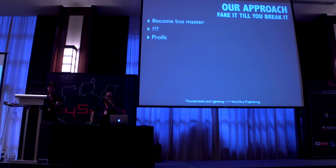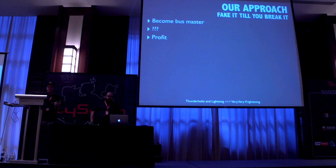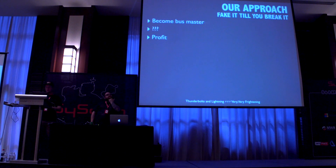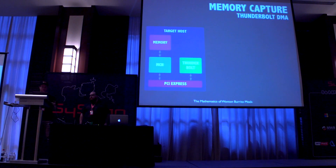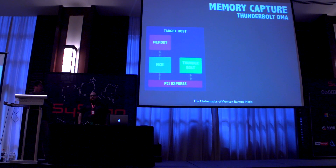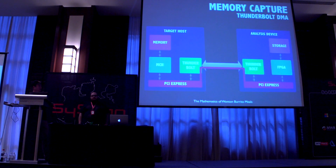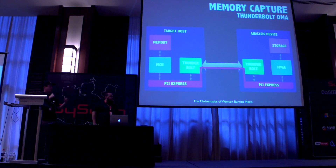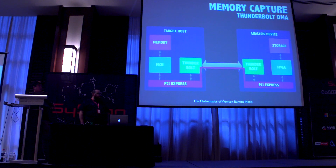To attack a Mac using PCI Express, we need to become bus master first so we can do all the reads and writes we want. The architecture we want is: target host with Thunderbolt controller, extended via a Thunderbolt to PCI Express adapter, connected to our FPGA. Basically, the PCI Express bus is extended out the Thunderbolt port, through the Thunderbolt chipset, to the other side — so it's equivalent to sticking a PCI Express card into the machine, but hot-plug.